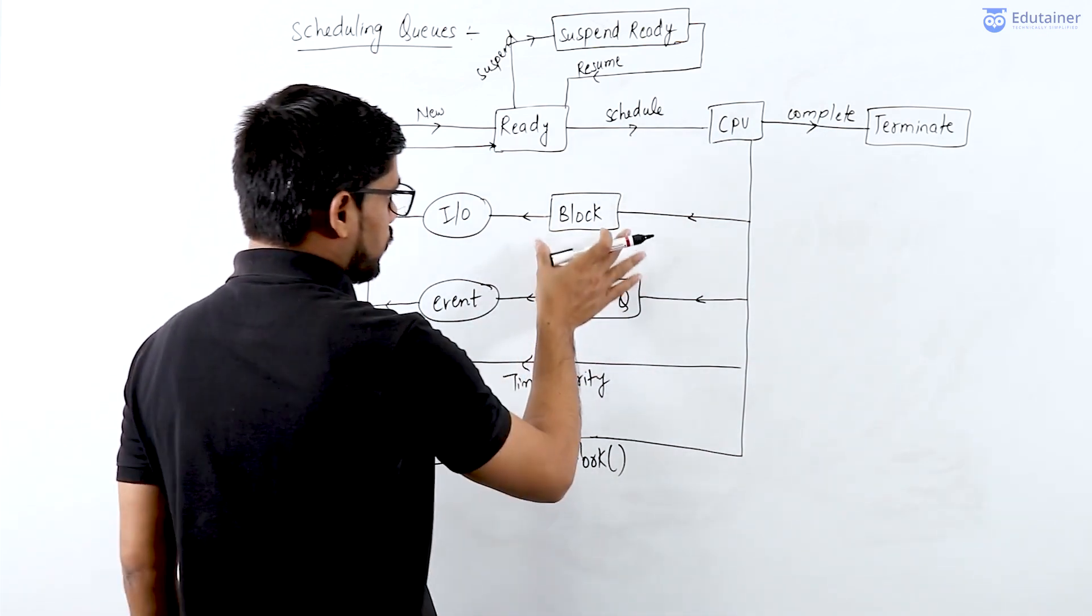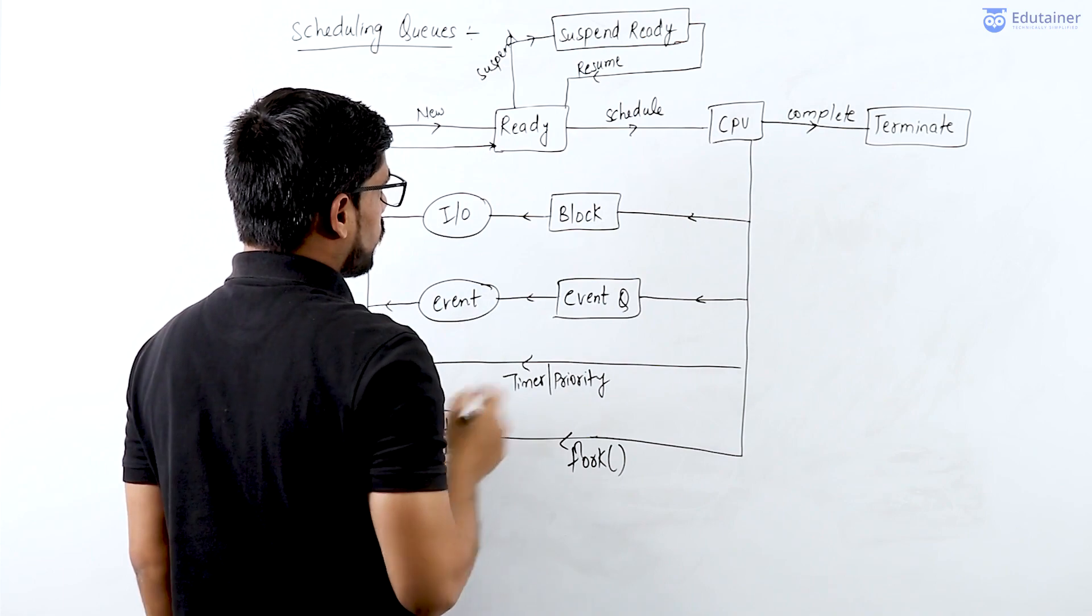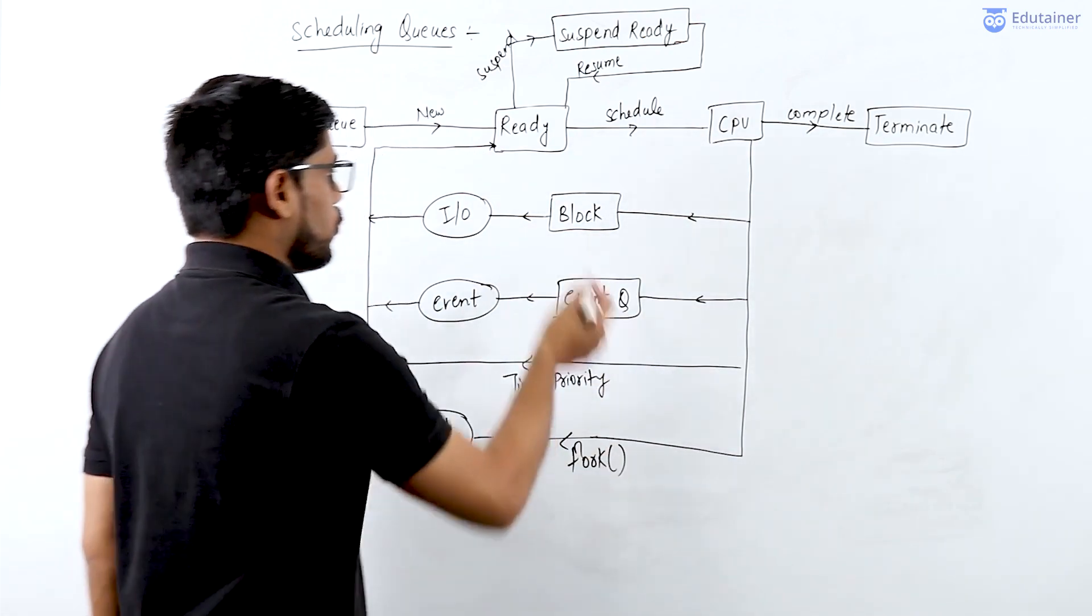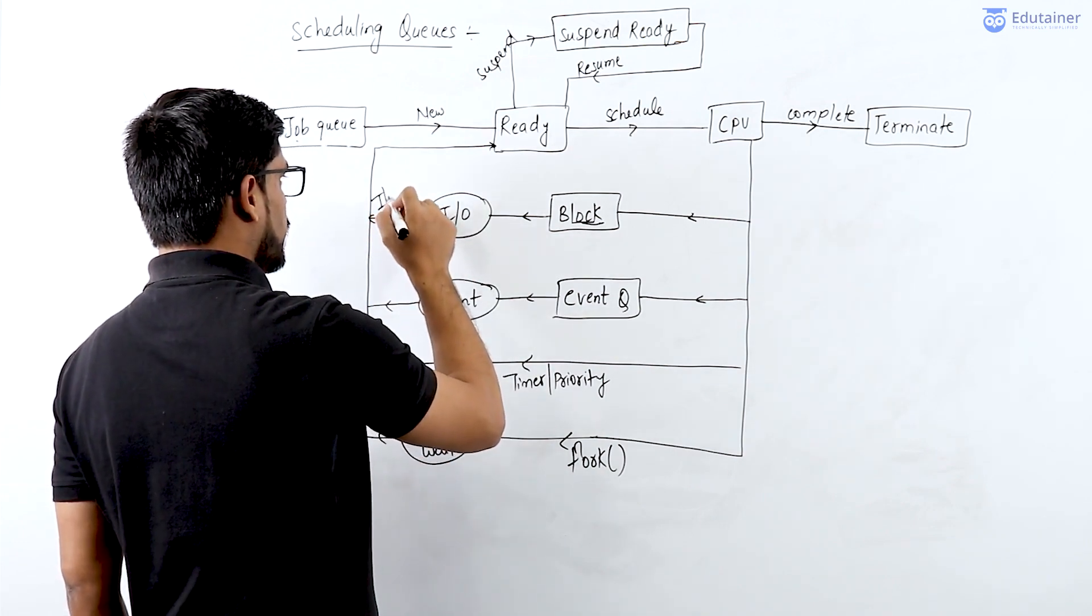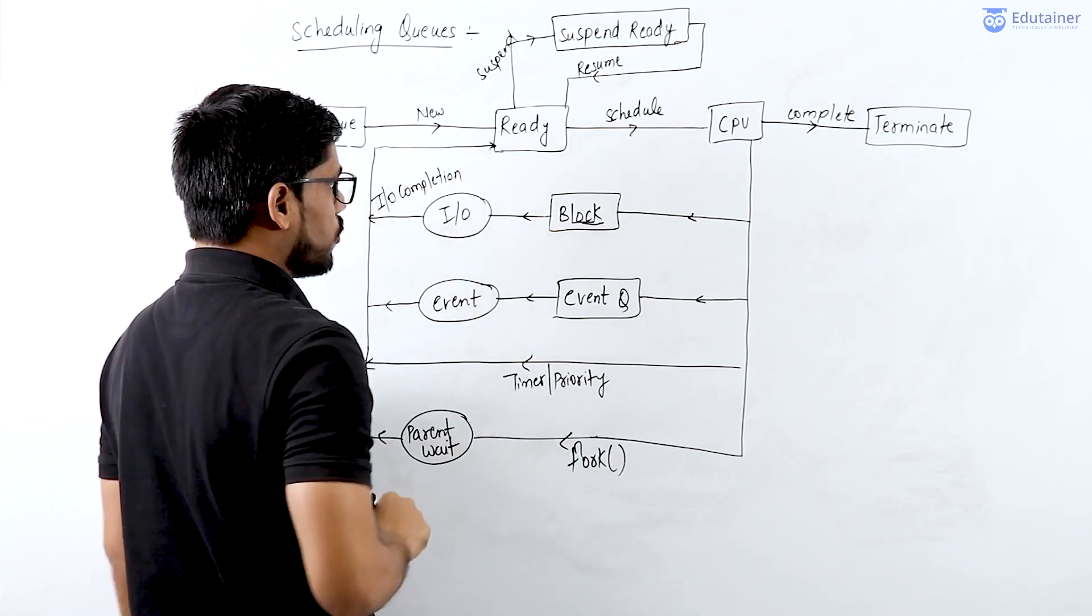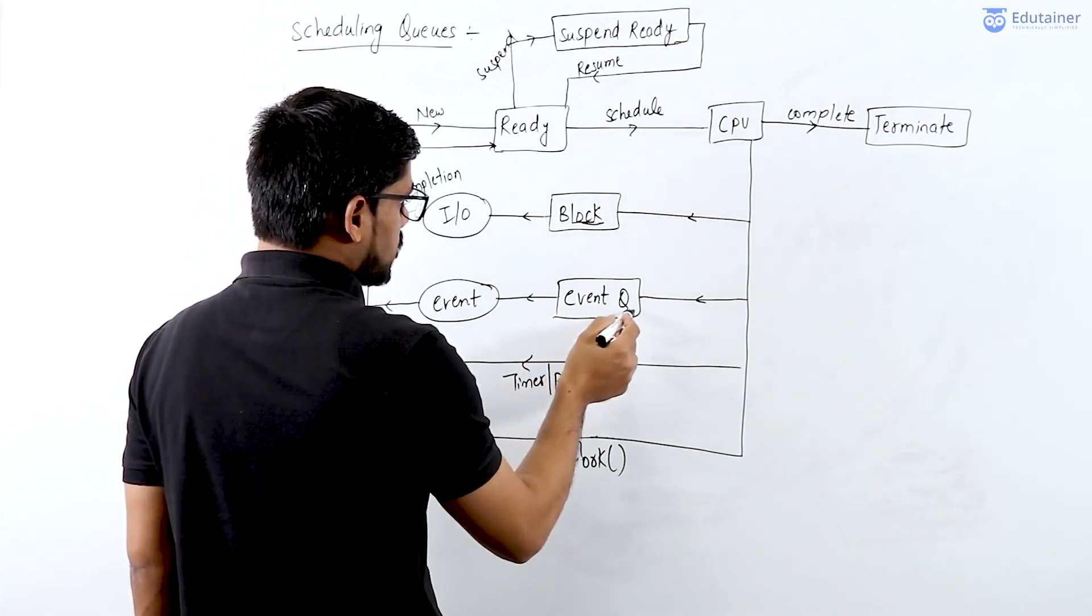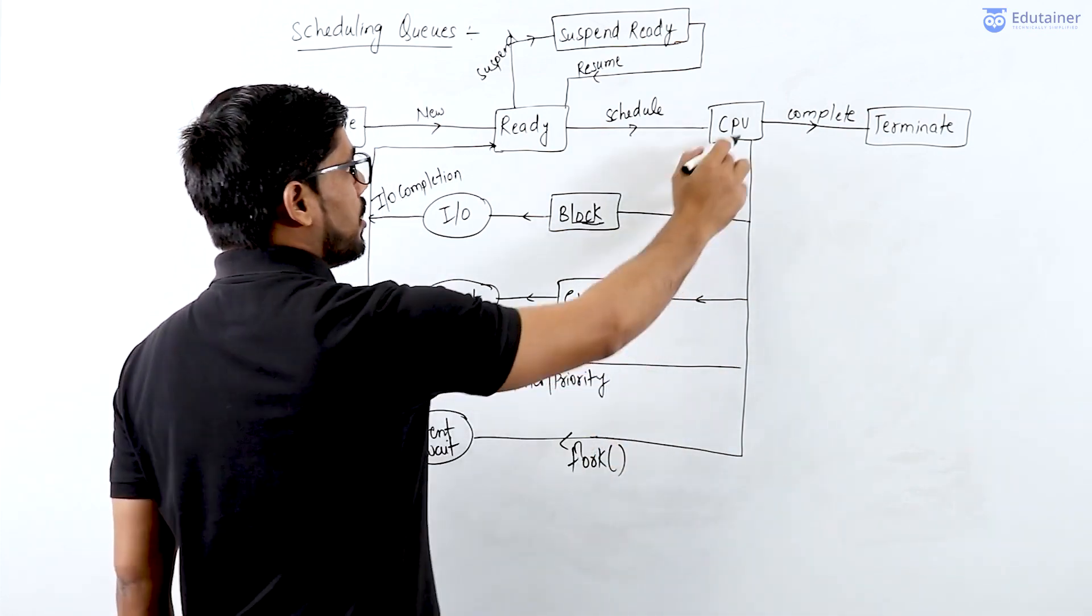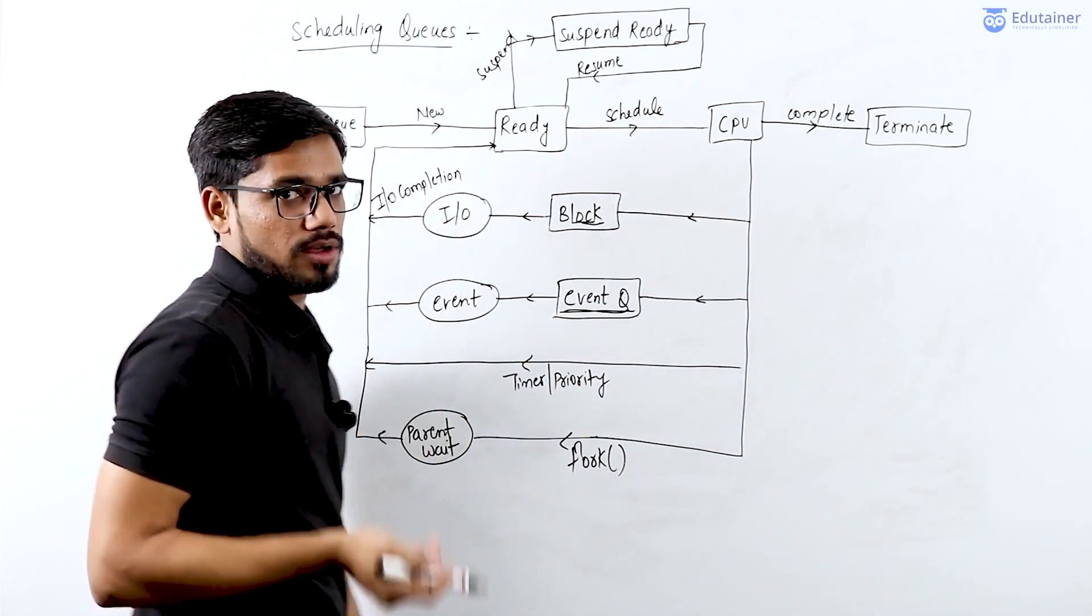Those events or interrupts are: first, block—when a process needs input output, it goes to the block or wait state. When its I/O task is completed, it goes back to the ready state. Next, for some event, a process might be forcefully removed from the CPU and go back to the ready state or suspend wait state.